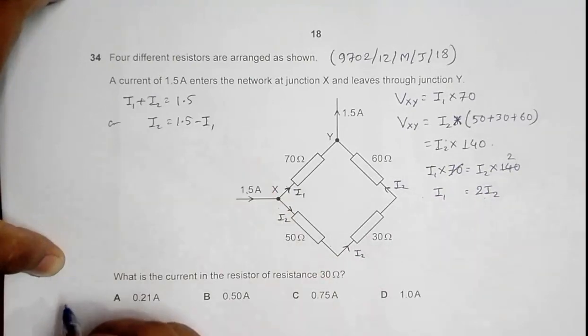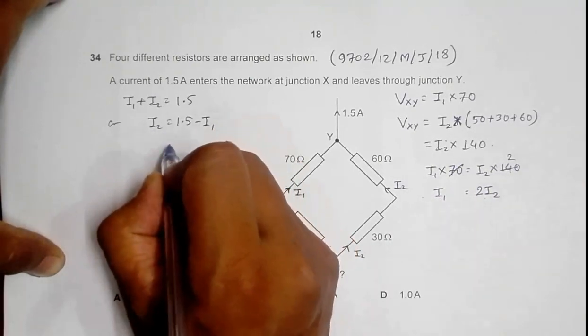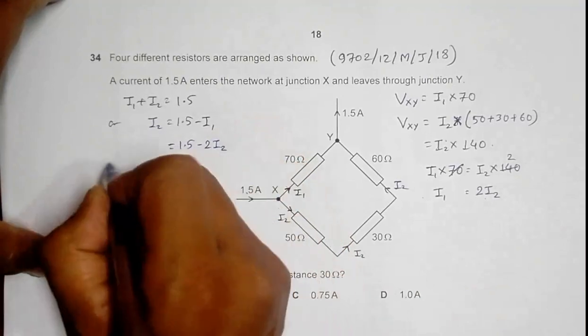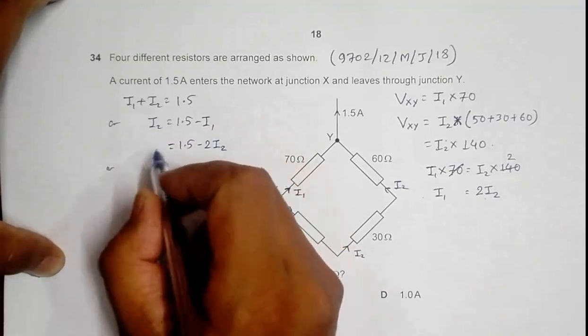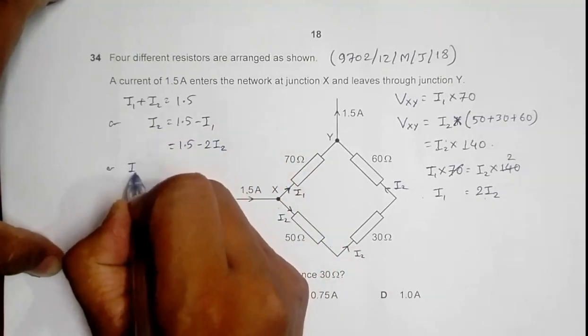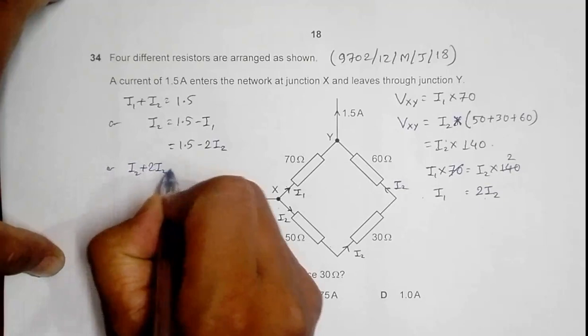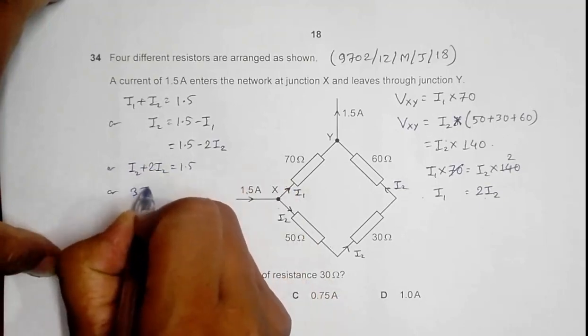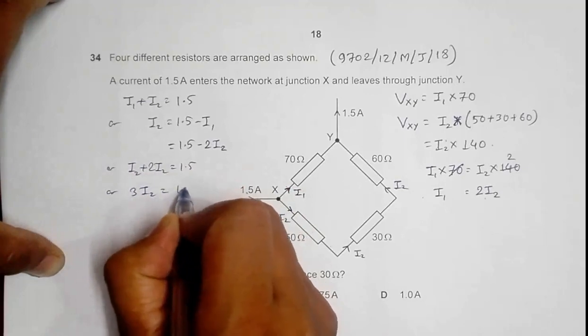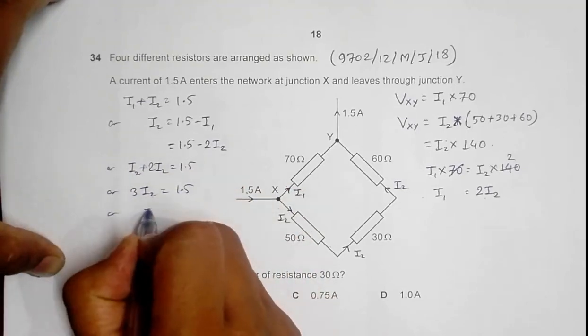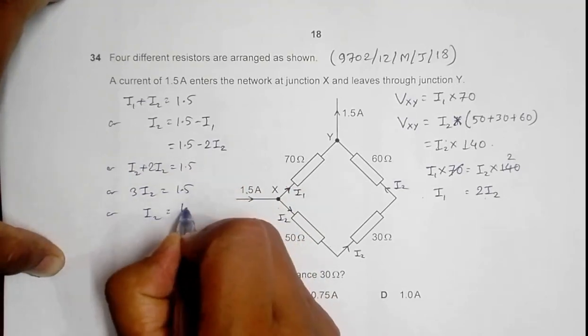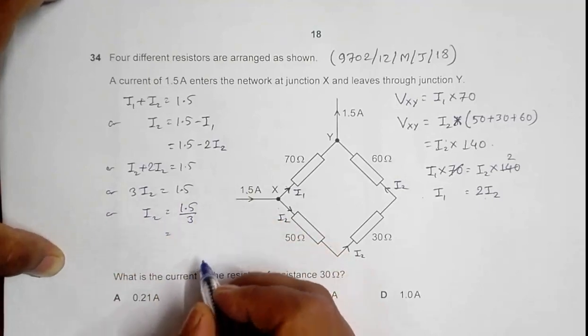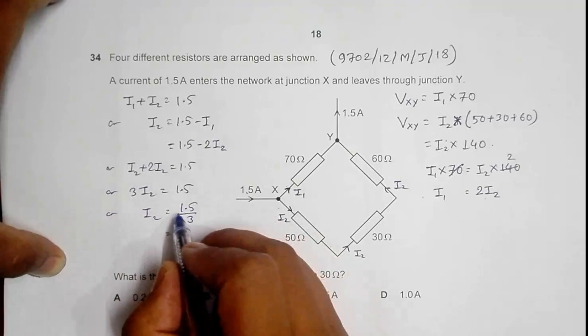If I use this value here, I'll have I2 equals 1.5 minus 2 I2, which gives me I2 plus 2 I2 equals 1.5, or 3 I2 equals 1.5.